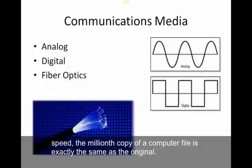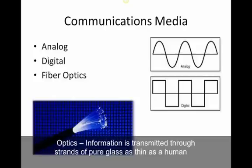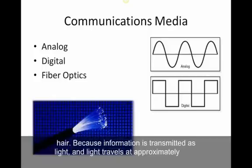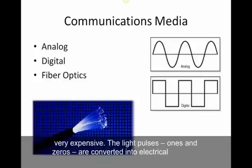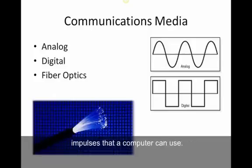Fiber optics are growing in popularity, although they're still rather expensive. With fiber optics, information is transferred through strands of pure glass as thin as a human hair. Because information is transmitted as light, and light travels at approximately 186,000 miles per second, fiber optics are very fast. A light pulse is pushed down very quickly — a pulse on is a one, off is a zero — and that light is converted into electrical impulses that a computer can use.